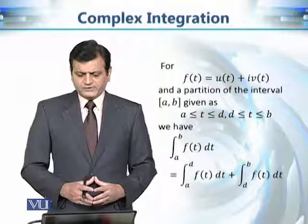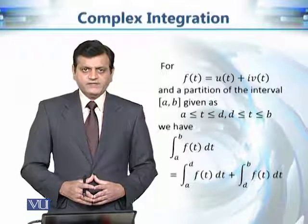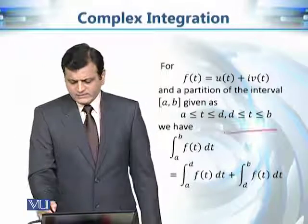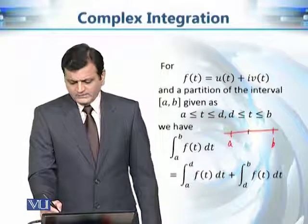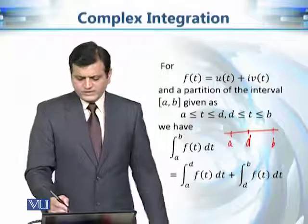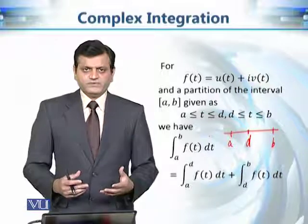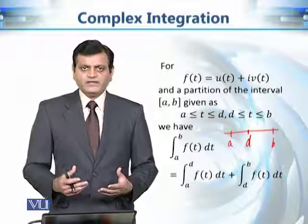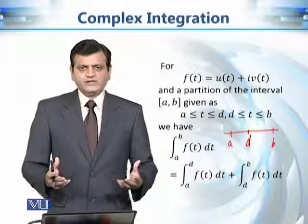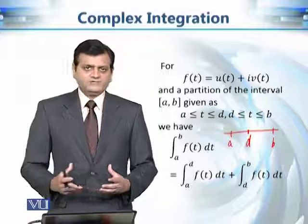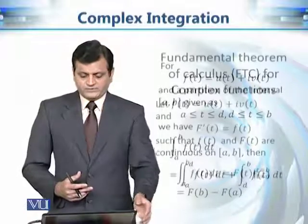Moving on to another property: if we integrate f(t) from a to b, and d is some point between a and b, then we can split the integral into two parts — integrating f(t) from a to d and then from d to b. Once again, this is exactly the same property as for integration of real-valued functions of one variable.